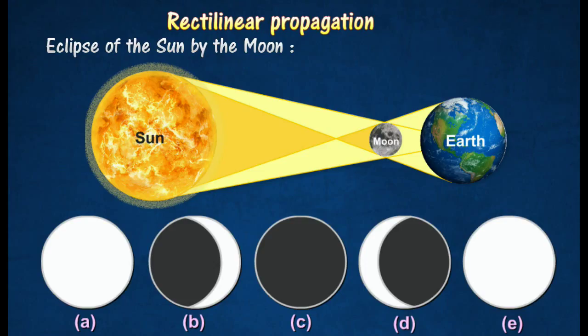The observer from different places A, B, C, D, and E can see the moon in different shapes. A and E show no eclipse, B and D show partial eclipse, and C shows total eclipse.